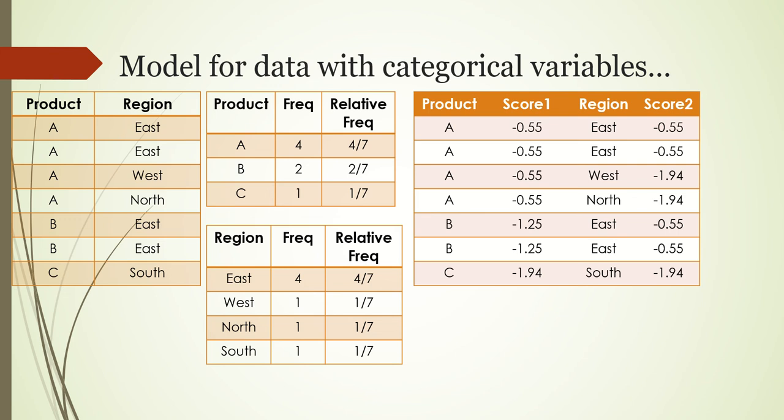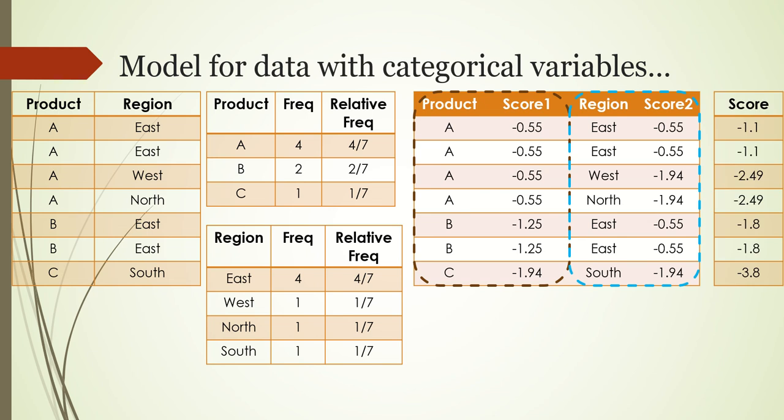Now we can just use an arithmetic mean to consolidate them. This will result in a final score column.